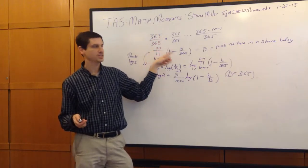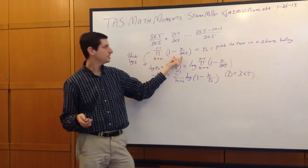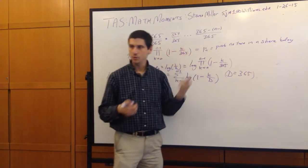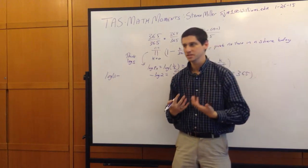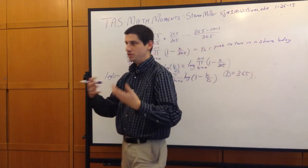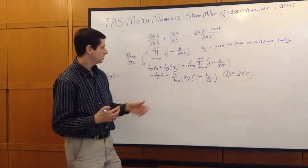Since 365 over 365 is 1, this simplifies nicely. Whenever we have products, we want to convert them to sums, so we take a logarithm, do the analysis, and then exponentiate at the end.